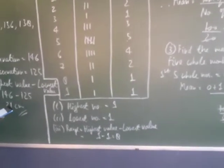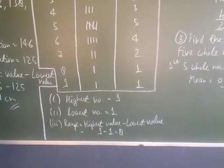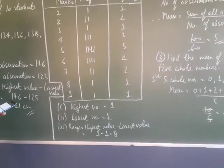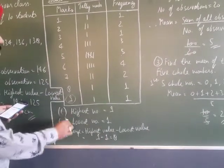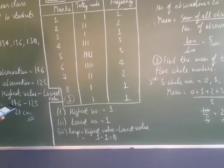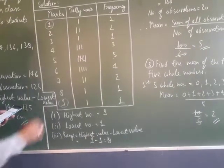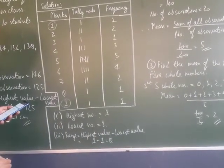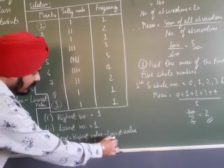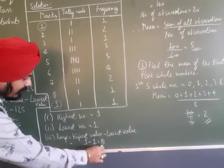The questions for this part are in the book. First part: which number is the highest? The highest number is 9. Second part: which number is the lowest? The lowest number is 1. Third part: range of the data = highest value minus lowest value = 9 minus 1 = 8.